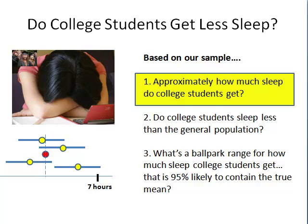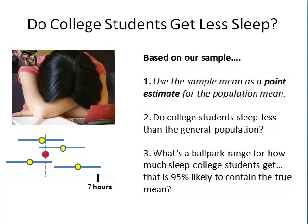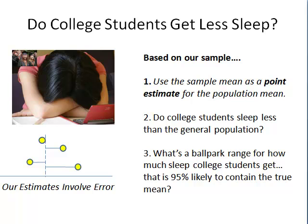Let's focus on that first question. To answer that, we'll use a sample mean as a point estimate for the population mean. That is, based on our sample of 40 randomly selected college students, we'll go ahead and estimate how much sleep the typical college student needs. We'll keep in mind that if we were to sample repeatedly, each of our sample means would be a little bit different.